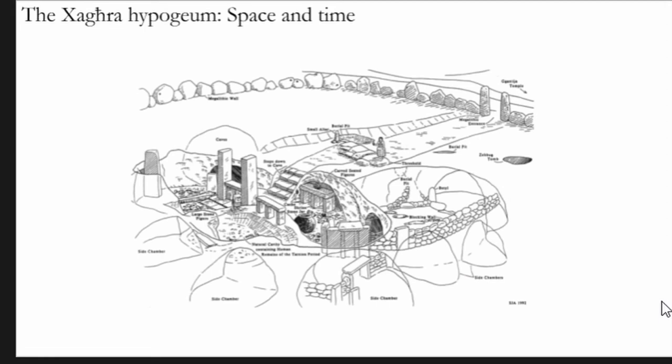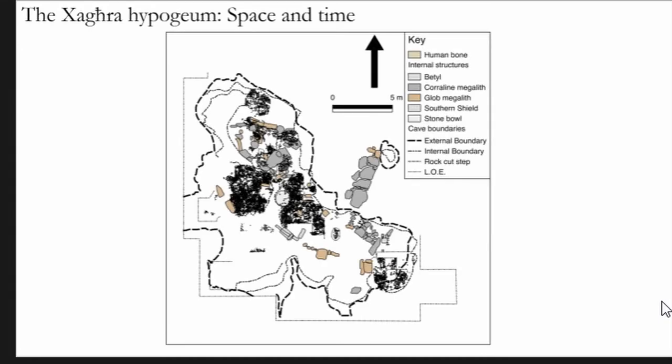So just talking about the Hal Saflieni Hypogeum specifically, this is a large mortuary complex set within a natural cave system which was then elaborated with megalithic architecture. As they constructed this space, we see discrete areas and discrete burial places. This map of the site shows how there are these areas of dense burial activity in these dense co-mingled burial deposits which also act as structural deposits.